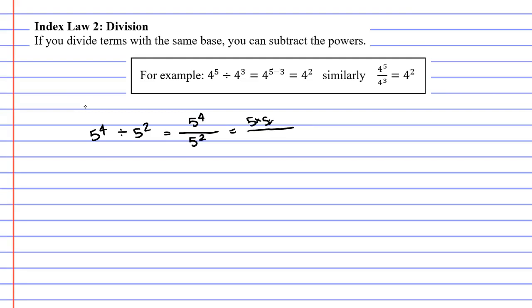we get 5 times 5 times 5 times 5 at the top of our fraction. And down the bottom, we only have two 5s, so 5 times 5.